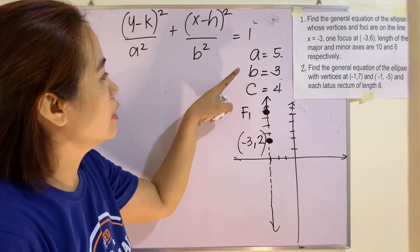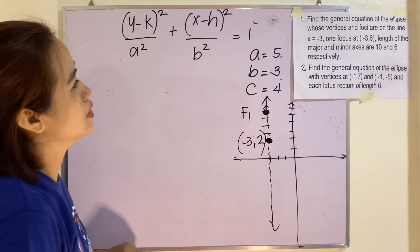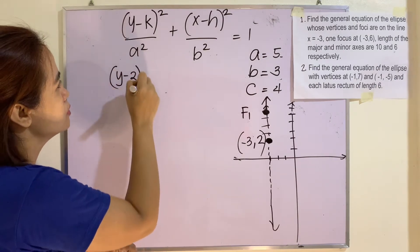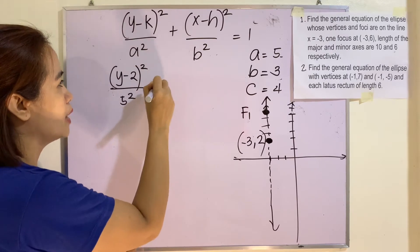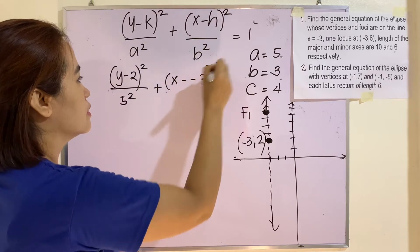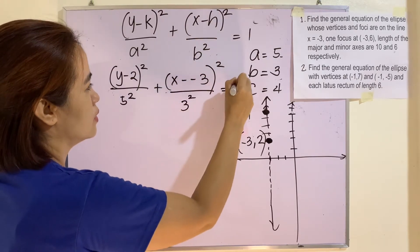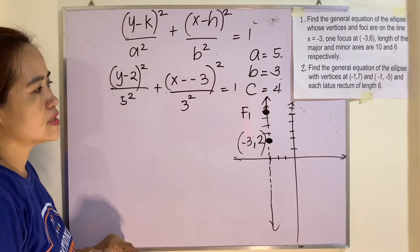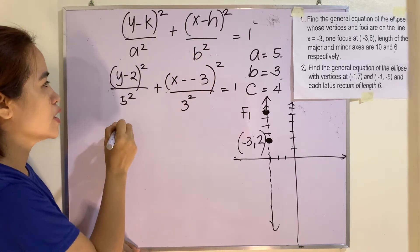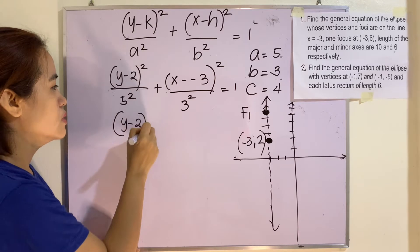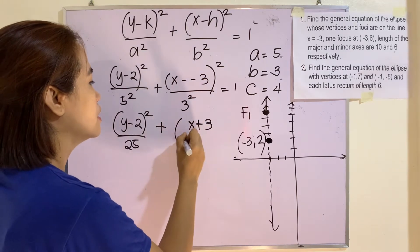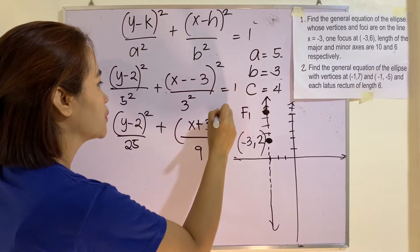We now have a, b, and the center. We are ready to find the equation. So this is (y - 2)² / 5² + (x - (-3))² / 3² = 1, which gives us (y - 2)² / 25 + (x + 3)² / 9 = 1. This is already our standard form of the equation.